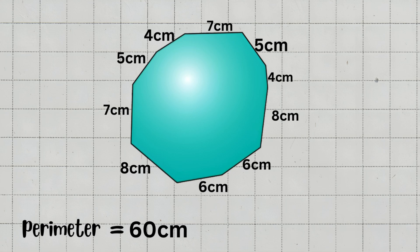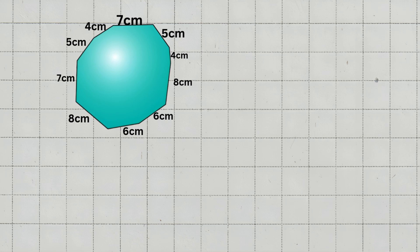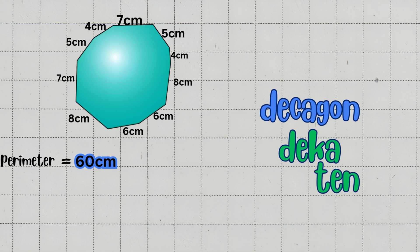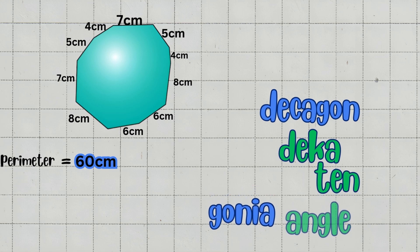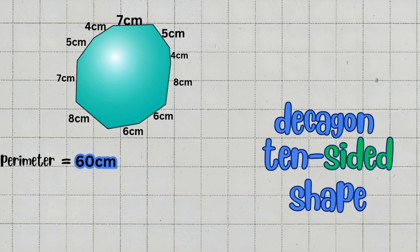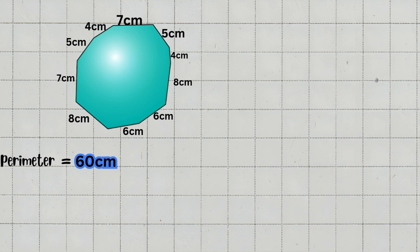Final answer: the perimeter of this irregular decagon is 60 cm. Fun fact — the word decagon comes from the Greek words deca, meaning 10, and gonia, meaning angle. So a decagon is simply a 10-sided shape with 10 angles. Sounds pretty cool, right?